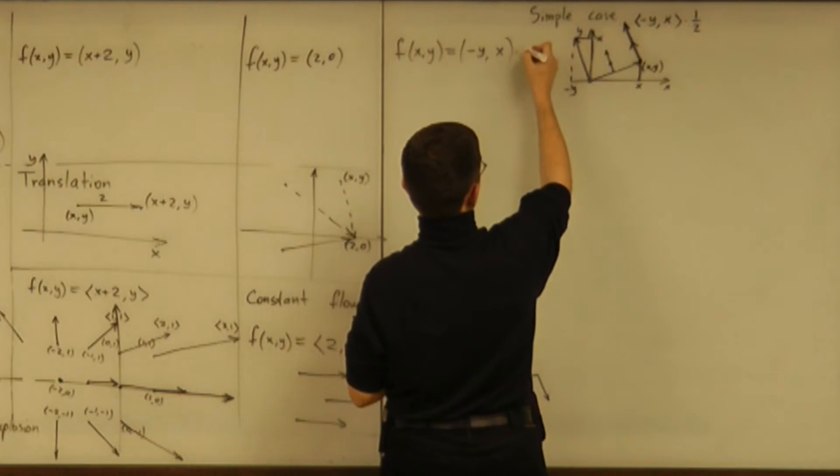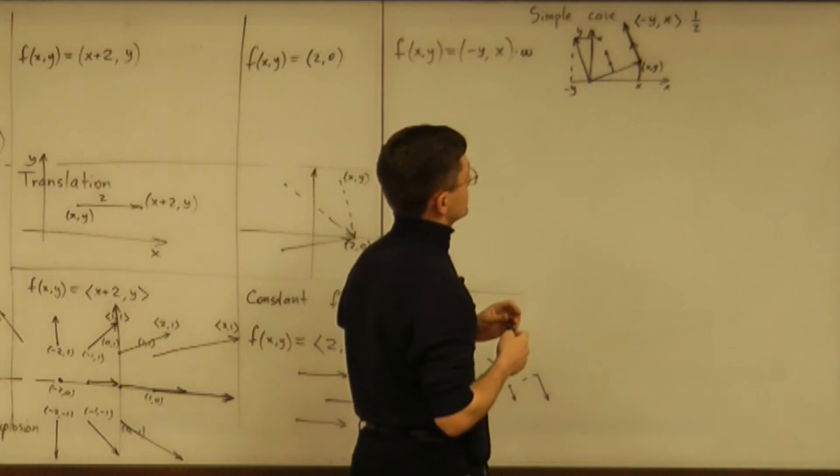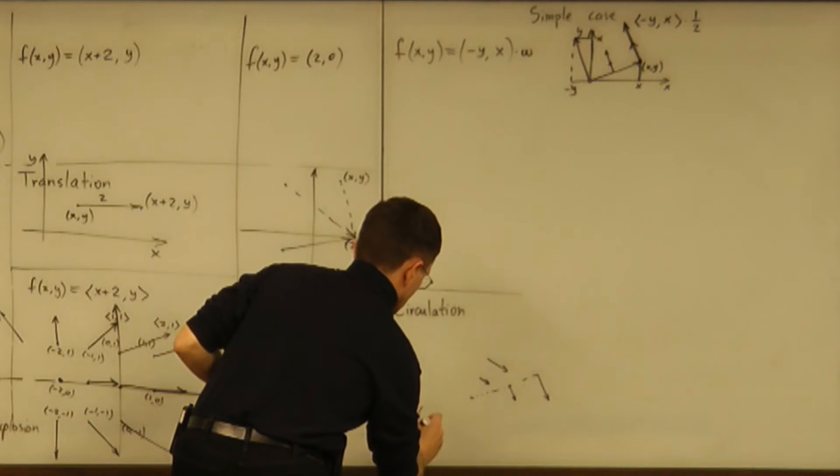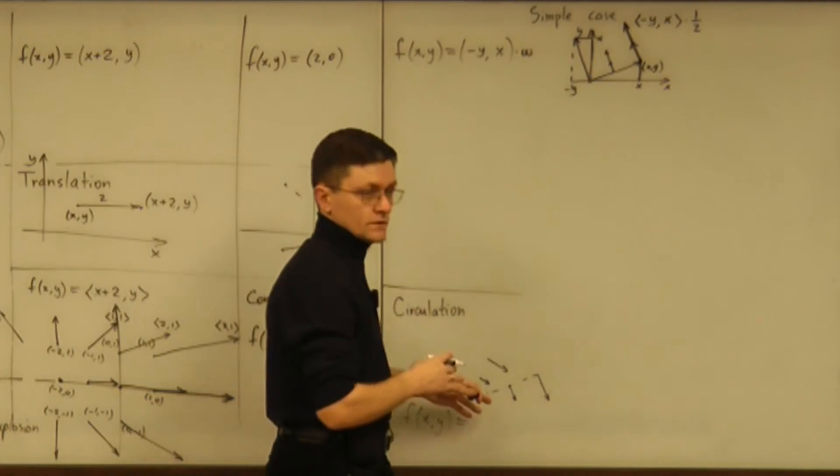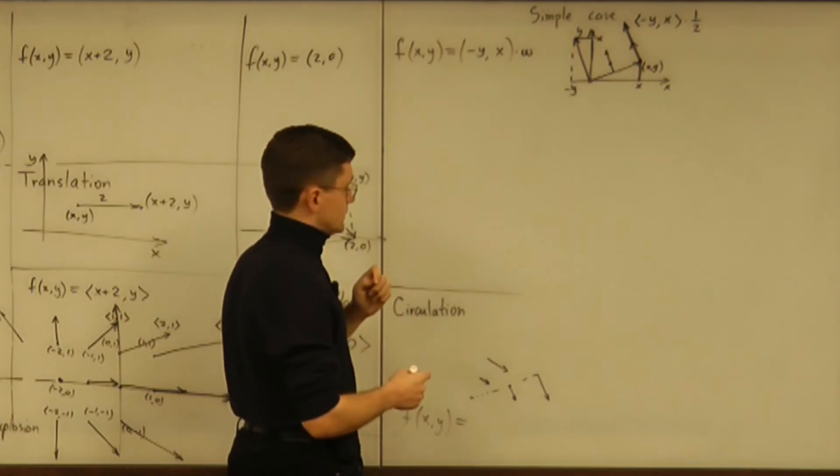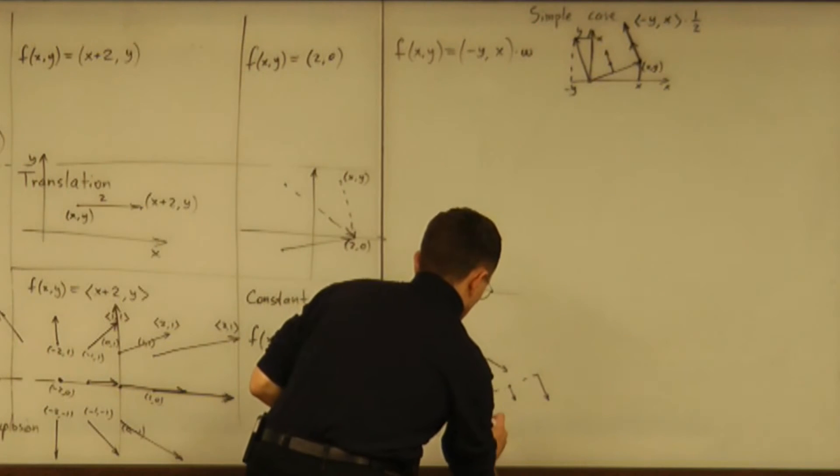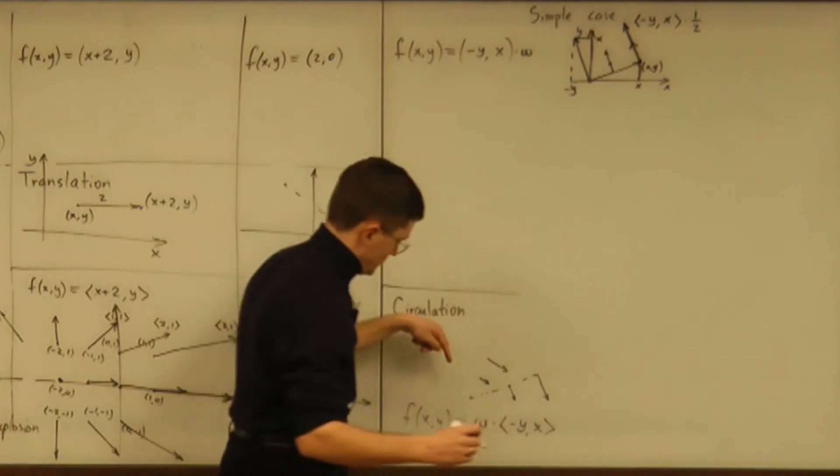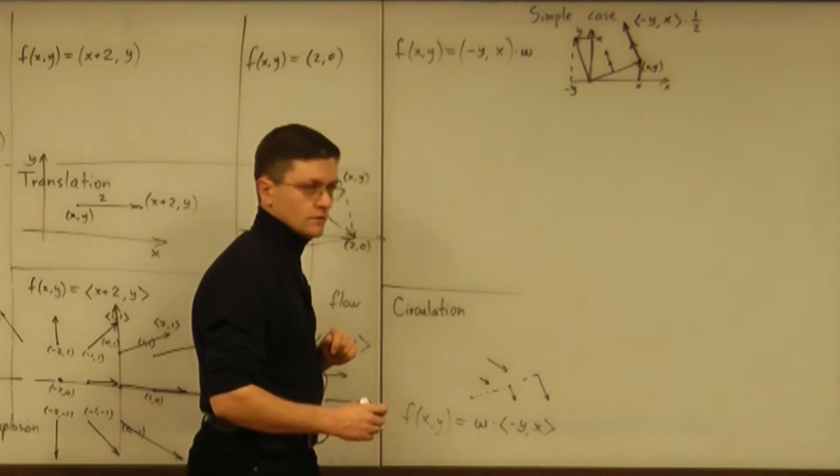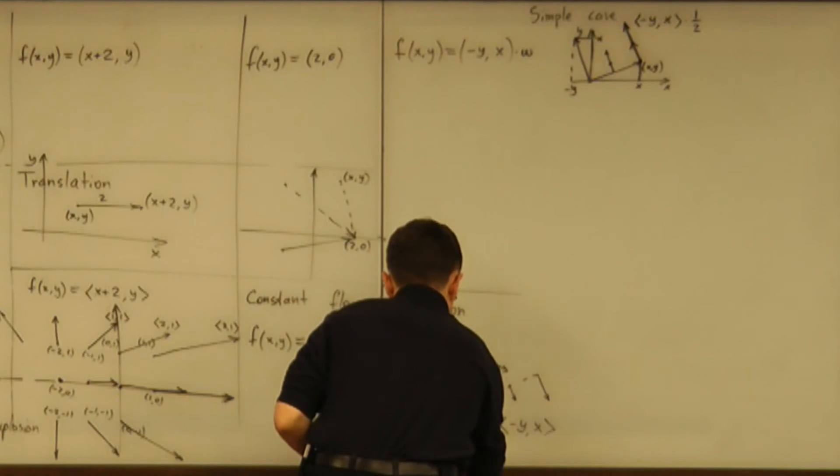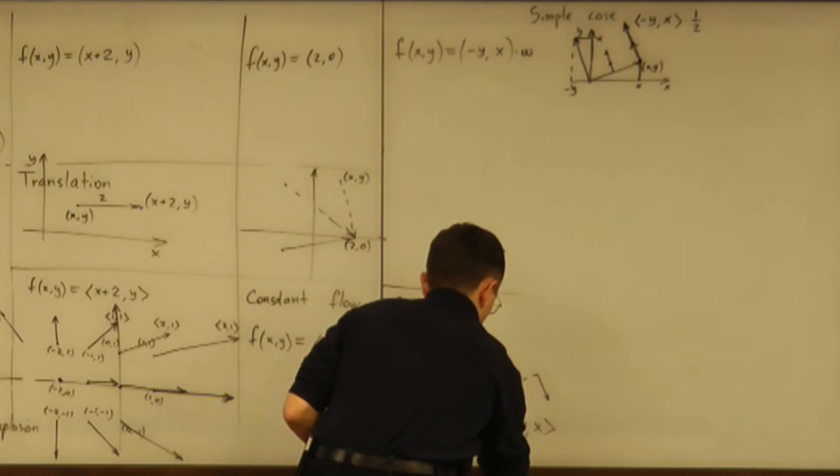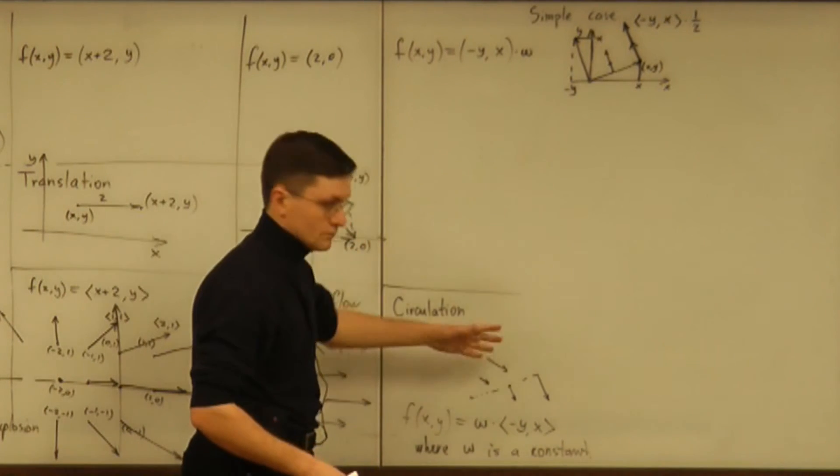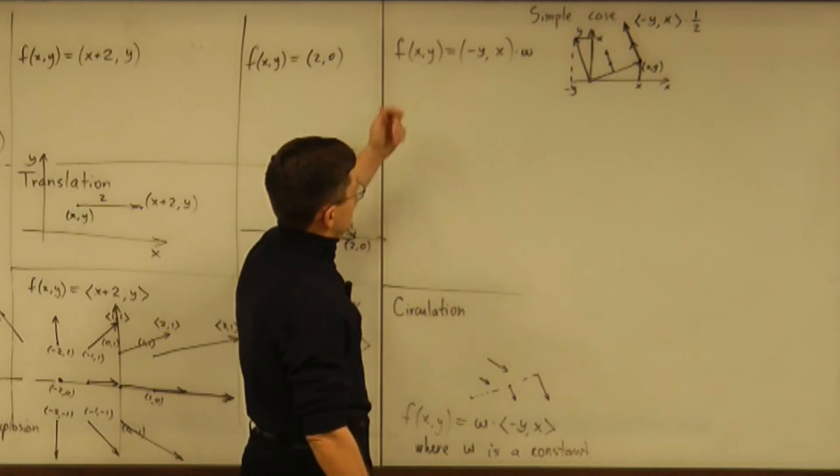And let me use notation omega for that coefficient because omega is going to have standard meaning in physics. Omega is the angular speed of that flow. So the formula is going to be omega times minus y, comma, x. So this is the kind of vector assigned to point x, y, where omega, of course, is a constant. Where omega is a constant. Which has perfect physical meaning being angular velocity.